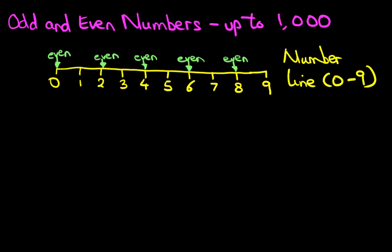So we start at number 1. That is an odd number. Counting in 2's, what comes after 1? It's 3. That is an odd number. 5 is an odd number. 7 is an odd number. And lastly, 9 is an odd number.